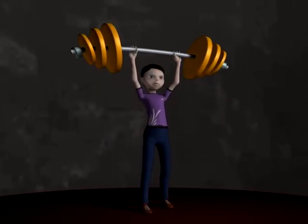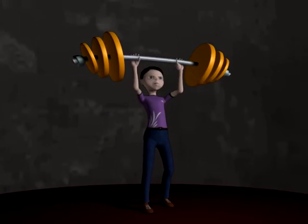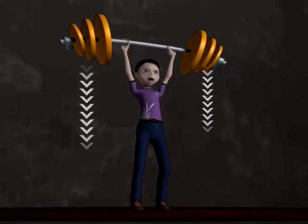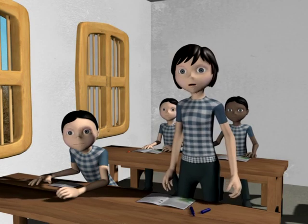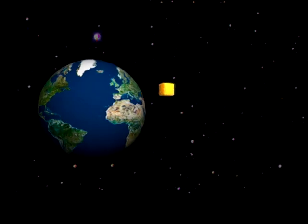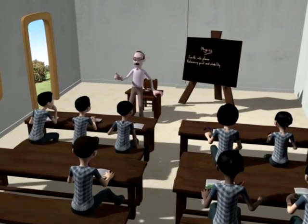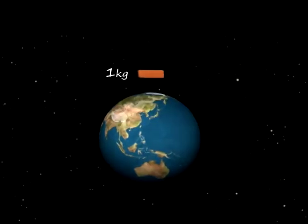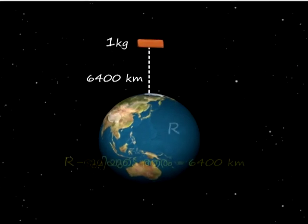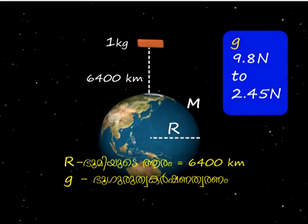When we hold an object, we feel a downward force on our hands due to its weight, which is equal to the force with which it is accelerated by the earth. The gravitational force of the earth on an object decreases as its distance from the surface of the earth increases. For example, a body of mass 1 kilogram raised to a height of 6400 kilometers — that is, the radius of the earth — has its gravitational force reduced to one-fourth, meaning its weight reduces from 9.8 N to 2.45 N. The mass remains the same.